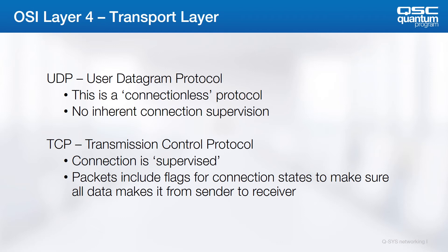Although not supervised, UDP packets are good for rapid transmission, like QLAN for example. A QLAN stream consists of 3,000 packets per second. It would introduce a lot more processing overhead to have the sender tell the receiver before sending every packet, and the receiver confirming that every packet got there. TCP is great for things like file transfers, where you want to make sure every bit got there, but you're not terribly worried about how fast the transfer occurs.